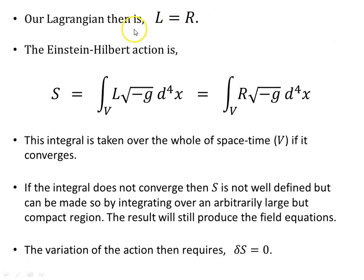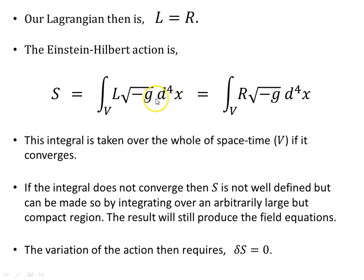So our Lagrangian L is the Ricci scalar R, and the Einstein-Hilbert action S is the integral over a volume of the Lagrangian over the volume element in four-dimensional space-time. That can be written as the Ricci scalar times this volume element — the integral over that volume element.